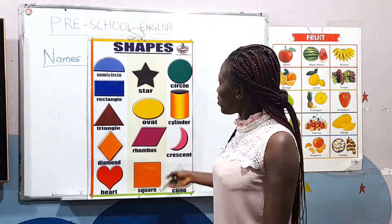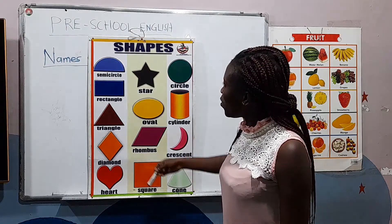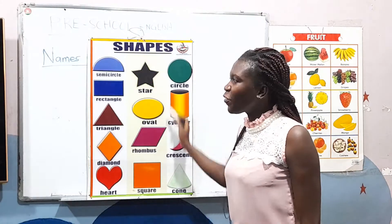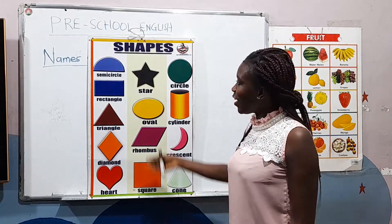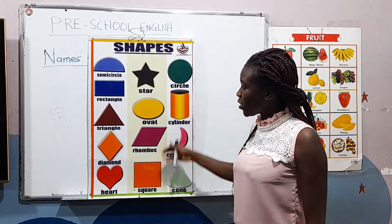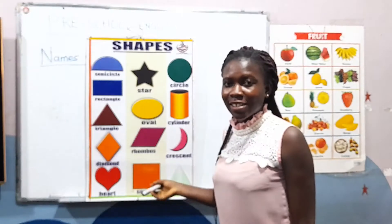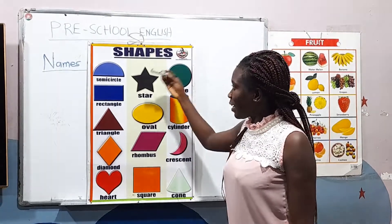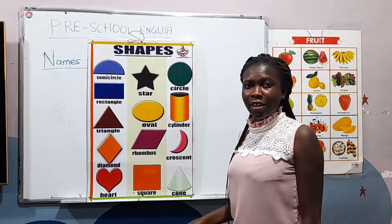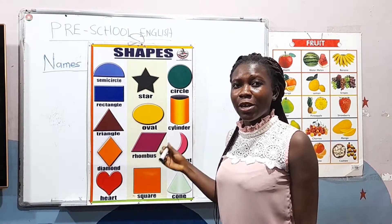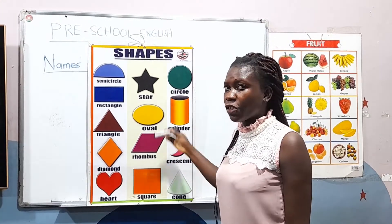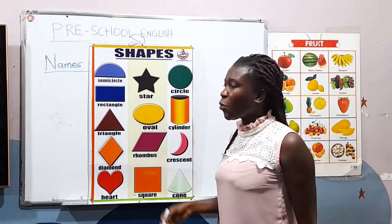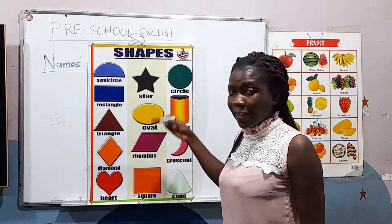When we look on the board, we have so many shapes here with different colors. There are a lot of shapes here with different colors. Let's see if we can name the colors of these shapes.